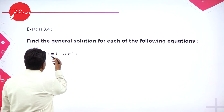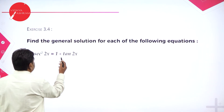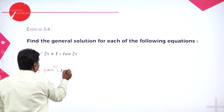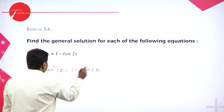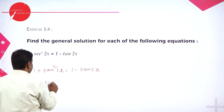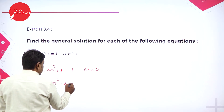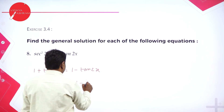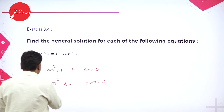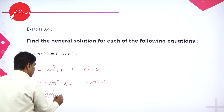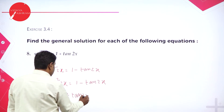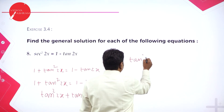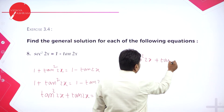Now the next problem, number 12: sec²2x equals 1 minus tan 2x. We know sec²x equals 1 plus tan²x, so 1 plus tan²2x equals 1 minus tan 2x. Rearranging — bringing tan 2x to the LHS and cancelling the 1s — gives tan²2x plus tan 2x equals 0.